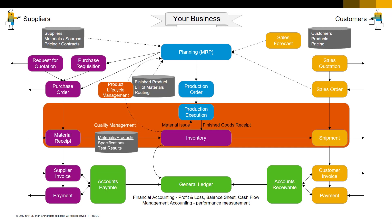If your business stores materials in a warehouse, you might also want to use a Warehouse Management System, or WMS for short. You might be thinking, wait a minute, aren't my materials being tracked in the inventory system? And yes, they are, but your inventory system can only tell you how much inventory you have. It can't tell you exactly where all your inventory is, apart from saying it's somewhere in the warehouse. If you're looking for one part in a giant warehouse, that's not much help. You're going to need to be a little more specific.